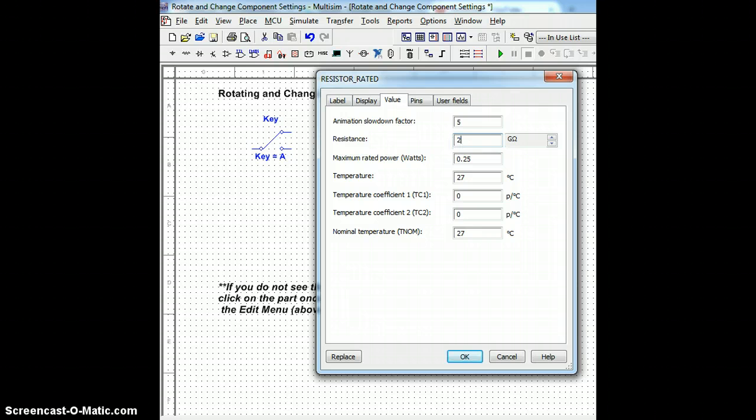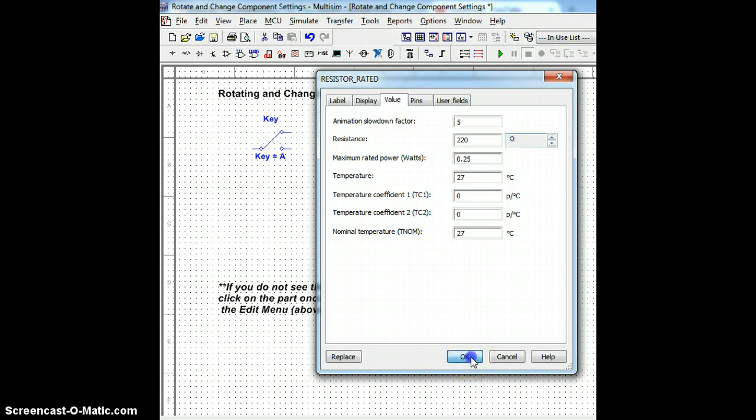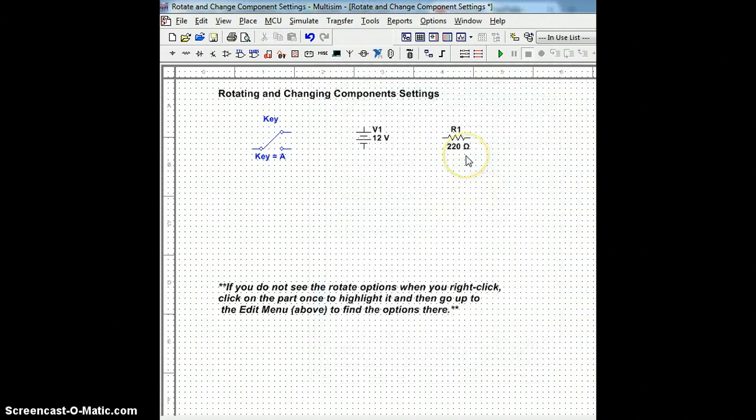The value here can be typed using your keyboard. I want a 220 kilo-ohm or ohm resistor, more practical, and hit OK. Notice my value has changed as well.